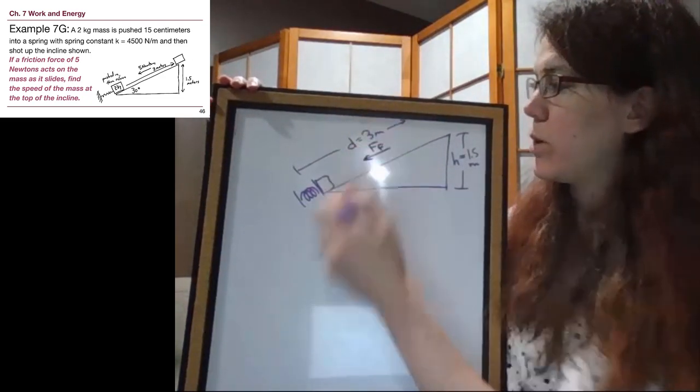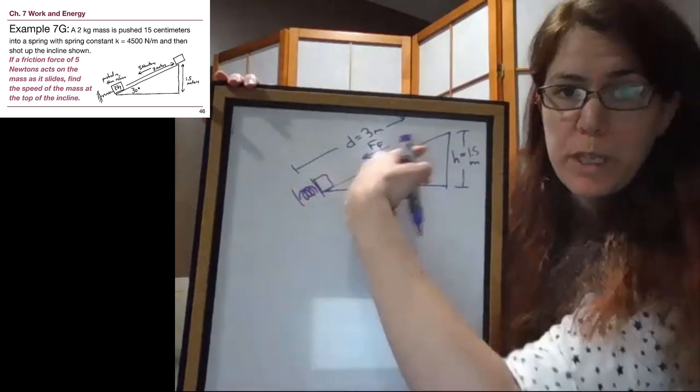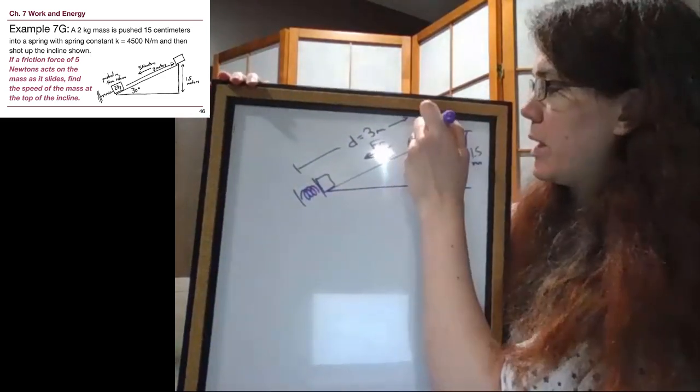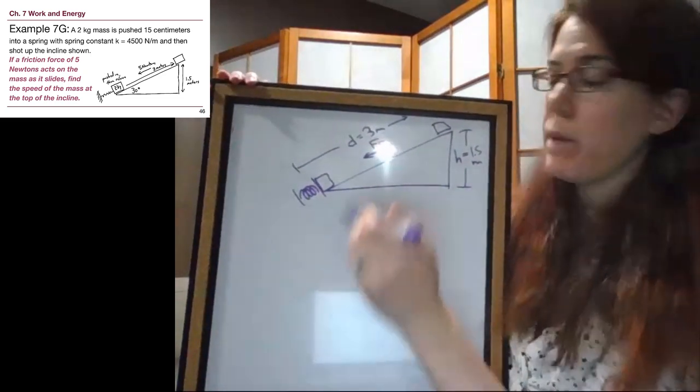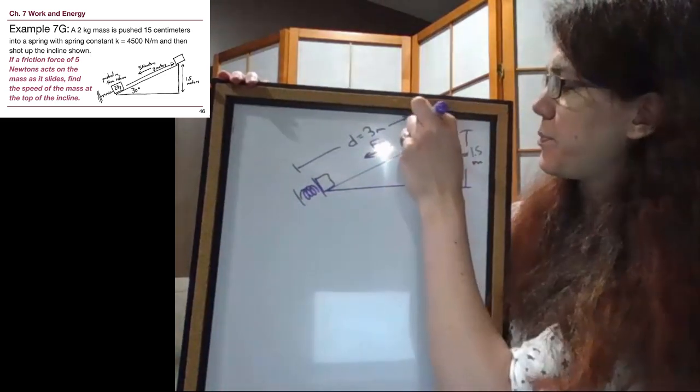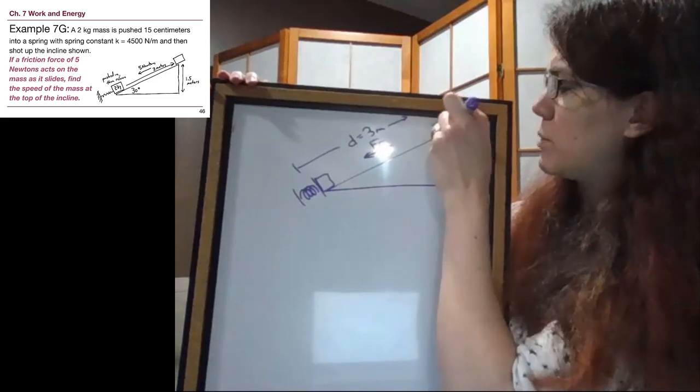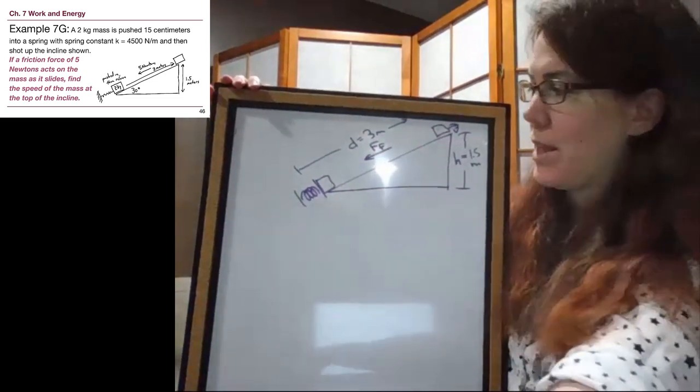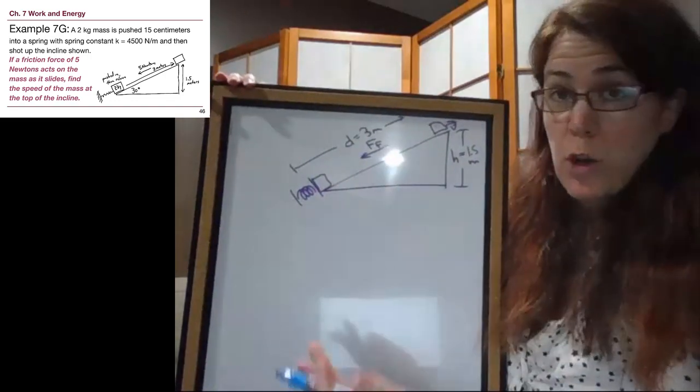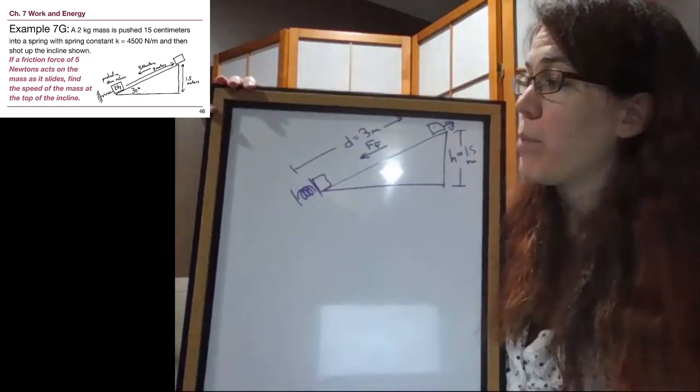But friction is working against the motion. Friction is going to be acting downhill because we're being told that we're going to slide uphill. And so the situation is asking us to find the speed of the mass at the top of the incline.